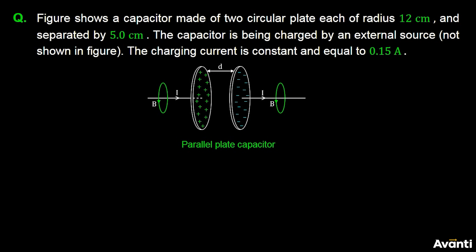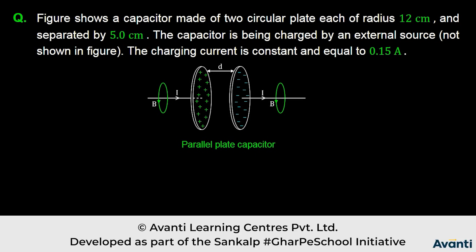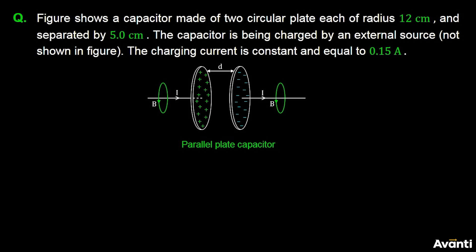The charging current is constant and equal to 0.15 ampere. So we have this data: we have radius of plates, we have this distance, and we have this current which is being charged.